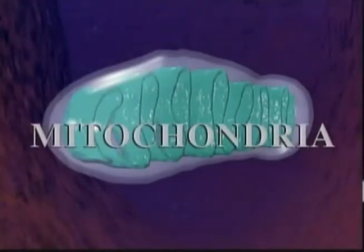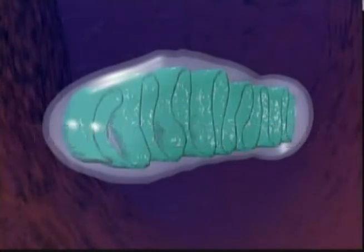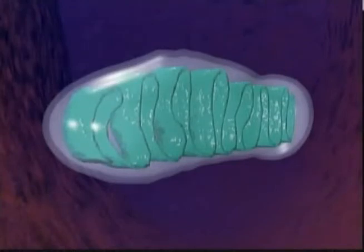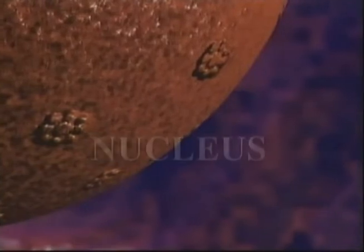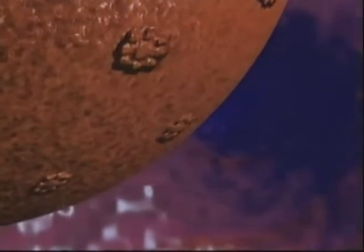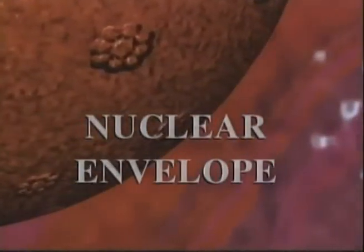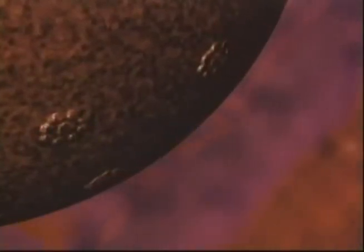Mitochondria are sausage-shaped organelles, often called little factories or power plants. Mitochondria help supply energy to the cell. A single animal cell can contain up to 1,000 mitochondria. The largest organelle, the nucleus, is often a round or oval-shaped structure. The nucleus has its own membrane, which resembles a cratered moon, called the nuclear envelope. The craters are nuclear pores, which act as gatekeepers controlling access to material moving in and out of the nucleus.